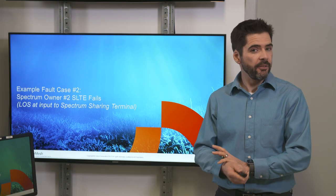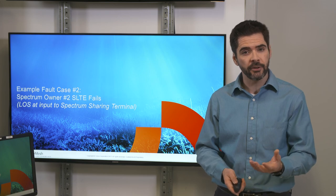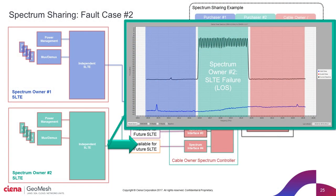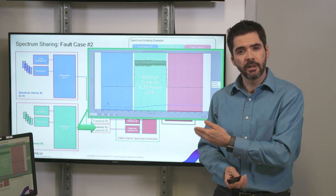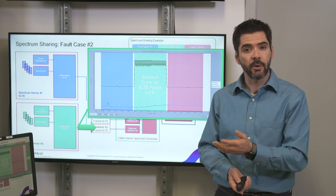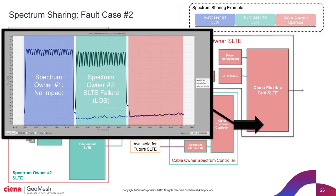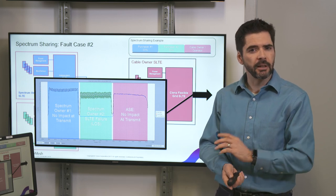Now let's move to example fault number two: a hard failure of the SLTE from spectrum owner number two, effectively causing a loss of signal at the spectrum controller. Looking at the SDMON data from our OPM — where the black line is baseline normal operations and the blue line shows the current situation — there is no light anywhere from spectrum owner number two's terminal, even though we expect light in the green area. At the output of the spectrum controller, spectrum owner number one is still operating normally, but the middle of the spectrum is empty.